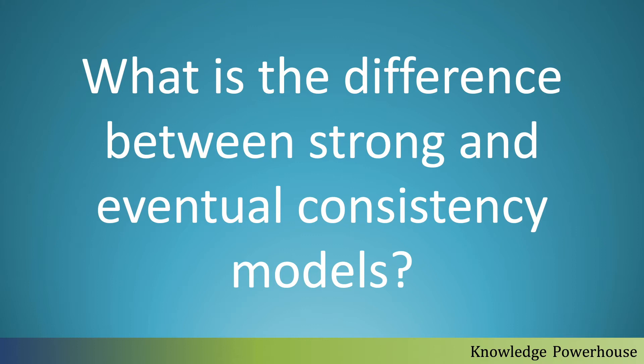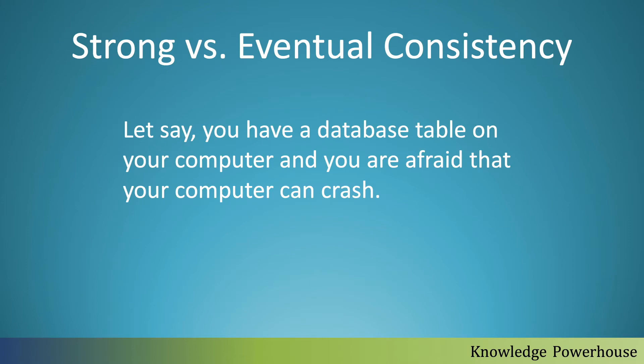There are different kinds of consistency models in databases and in our systems — strong consistency and eventual consistency. Let's see what the difference is between these two. Say you have a database table on your computer, and you are afraid that your computer can crash and you will lose the data. So you want to make some kind of replica or backup of it.